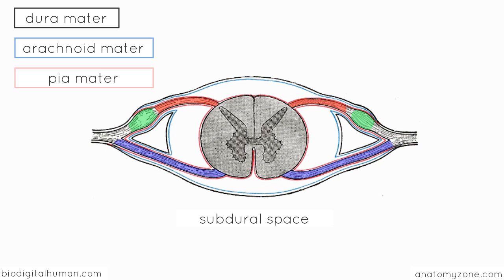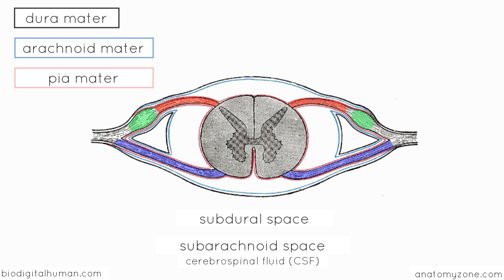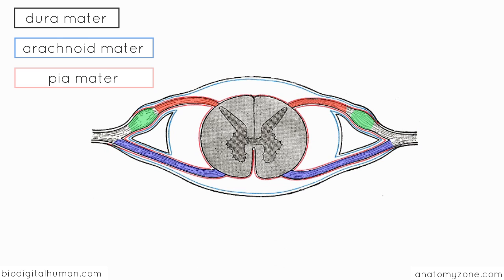Between the arachnoid mater and the pia mater, you've got the subarachnoid space, which is important because this is where the cerebrospinal fluid, or CSF, circulates. The pia mater is represented by the red line which runs very closely to the dorsal roots and to the spinal cord itself — the pia mater adheres very closely to these spinal cord structures.